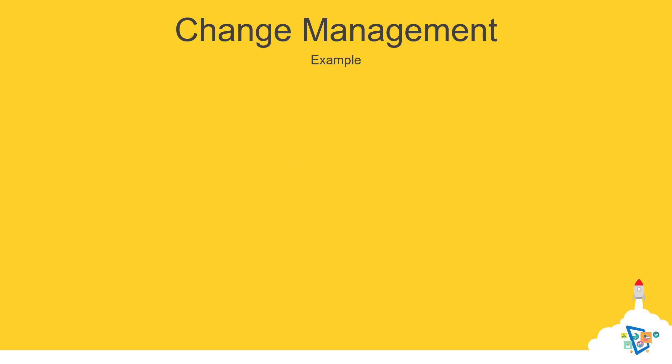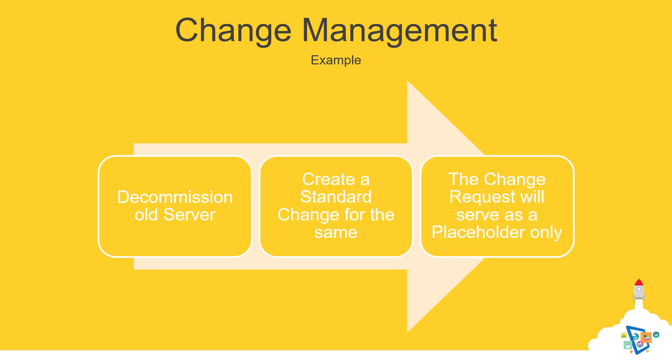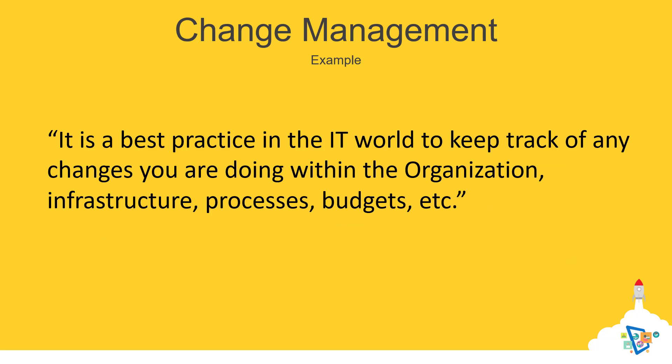An example of a standard change would be to decommission a server that is no longer needed. This has been raised by the local IT — they know they have replaced this server with a newer one with better specifications, and since they don't need it any longer, they don't want to have it registered in the domain or in the configuration management database. It is a best practice in the IT world to keep track of any changes you are doing within the organization: infrastructure, processes, budgets, etc.